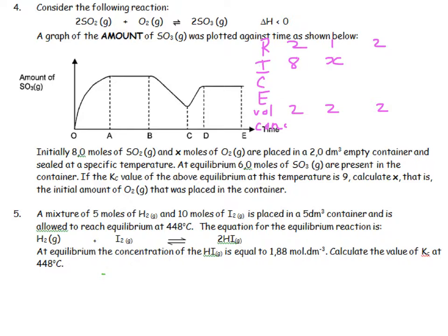It's sealed at a specific temperature. At equilibrium, there are 6 moles of SO3. Remember, there's a link between the consumed reactants and equilibrium products, so 2:1:2 is the same as 6:3:6. Since the Kc value is 9, calculate x, the initial amount of O2.